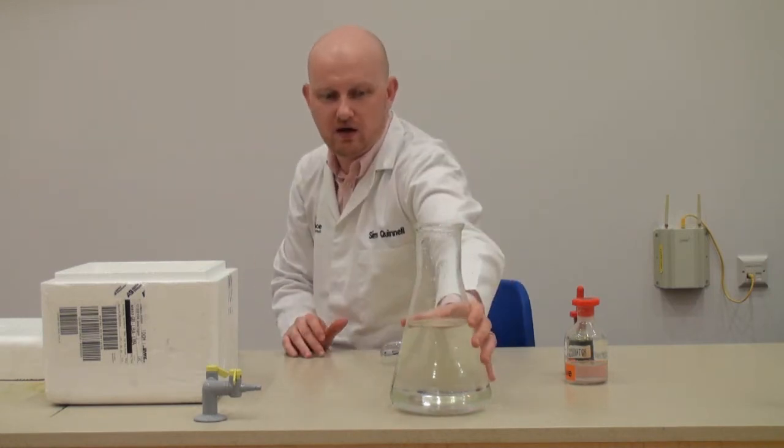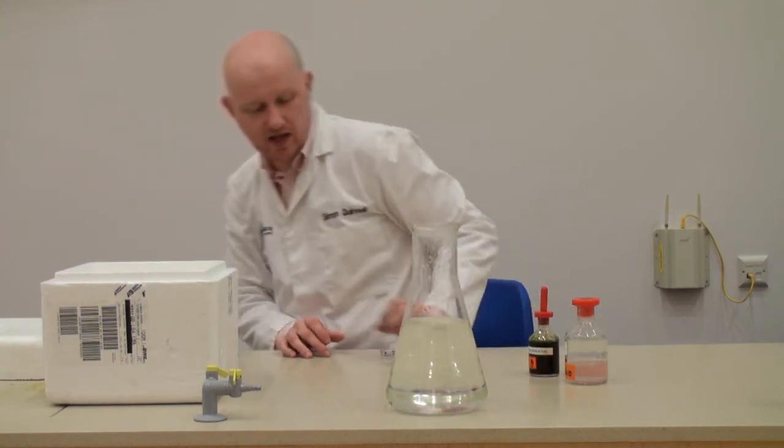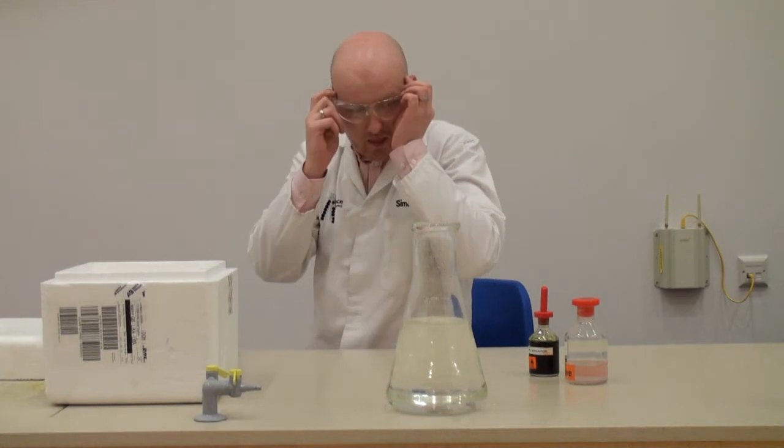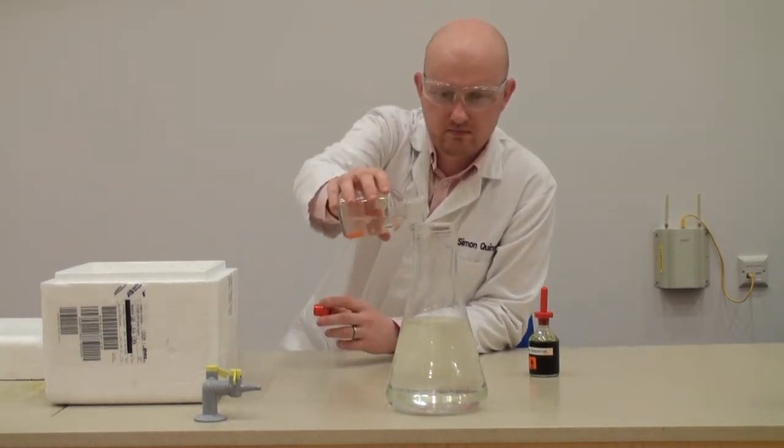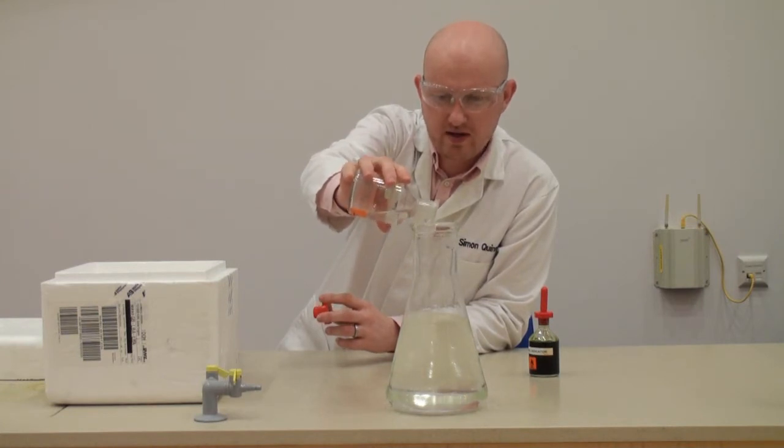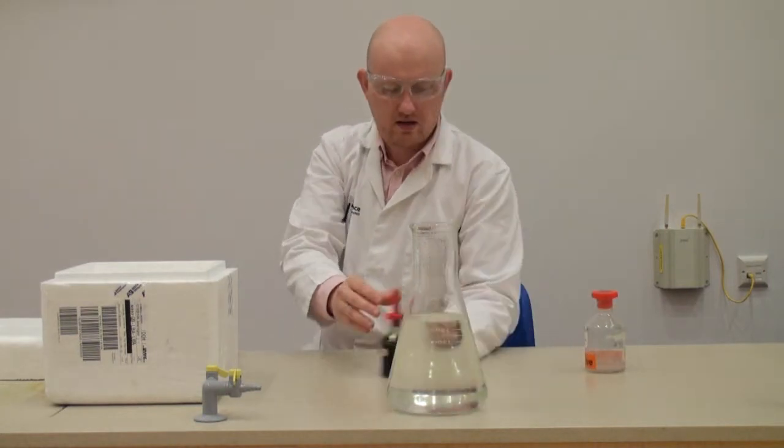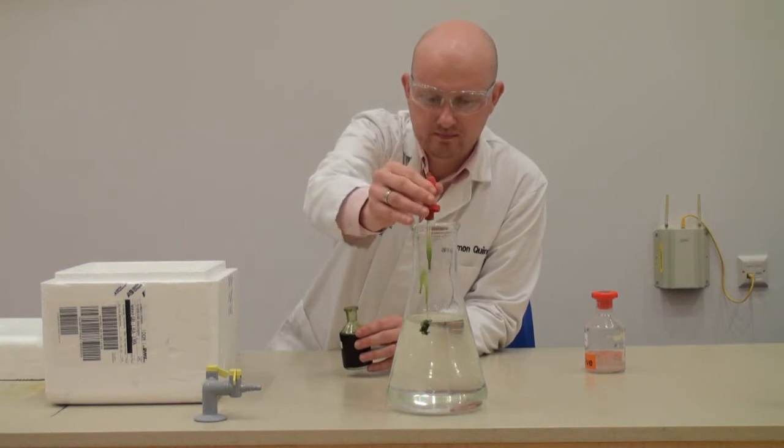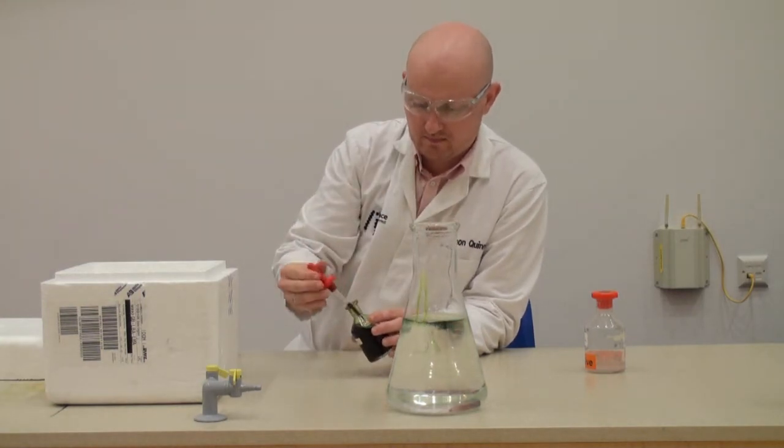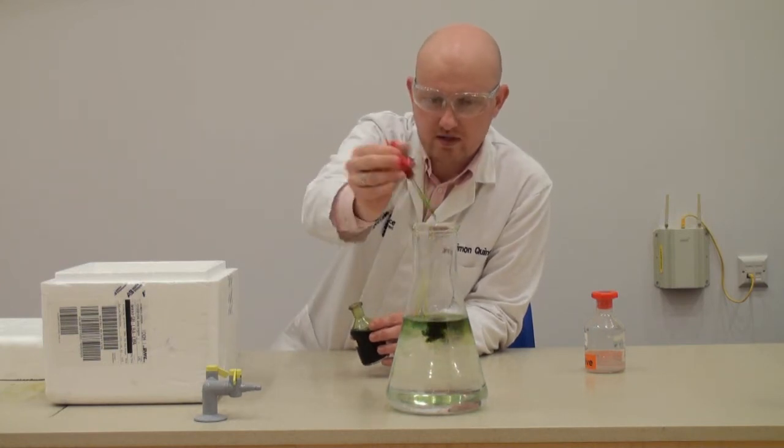Now over here, I have a flask with some water in it. To this flask, I'm going to add some sodium hydroxide. Now this is just to make it slightly alkaline. And then I'm going to add some universal indicator.